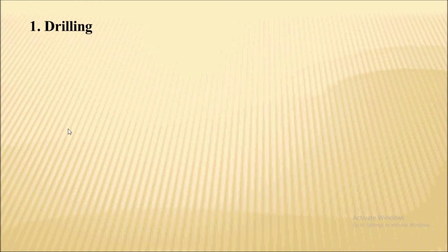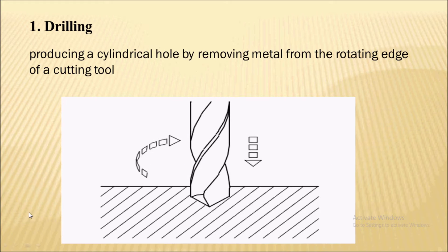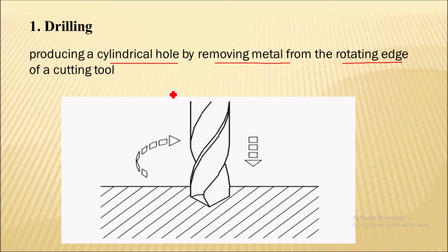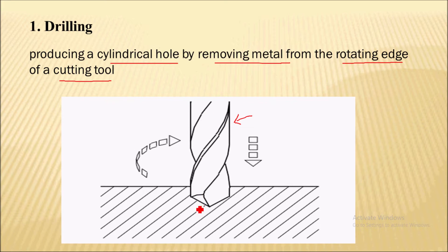The first operation is drilling itself. It is the simplest drilling operation — it produces a cylindrical hole in a workpiece by removing metal from the rotating edge of the cutting tool, which is the drill bit. The drill bit has multiple cutting edges and creates the cylindrical hole in a workpiece.